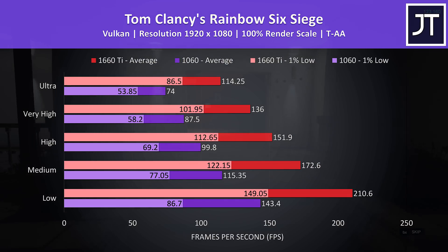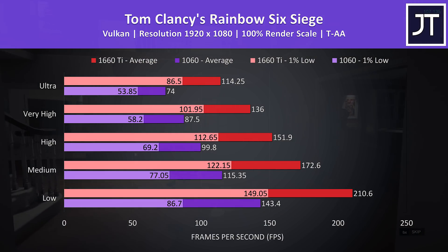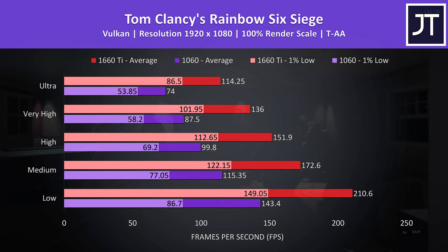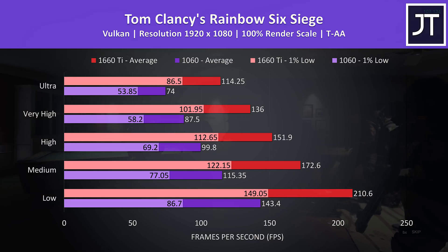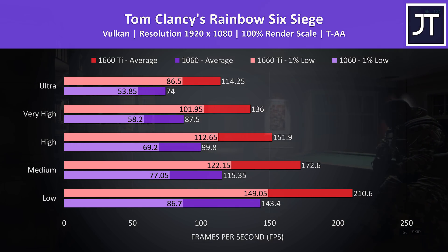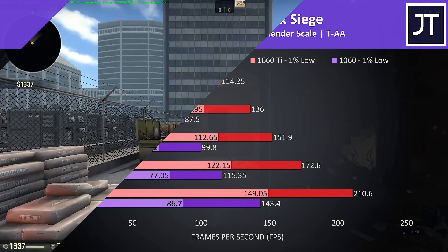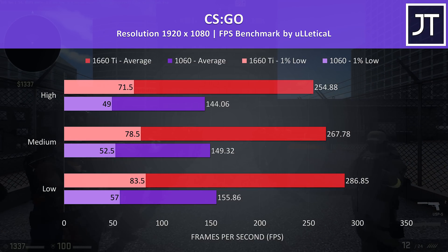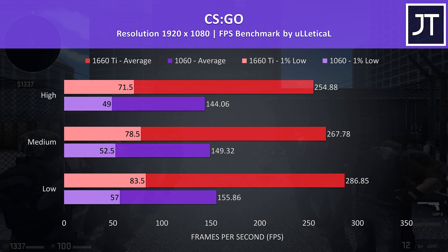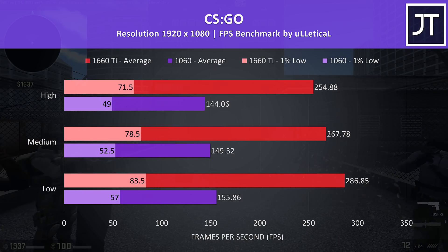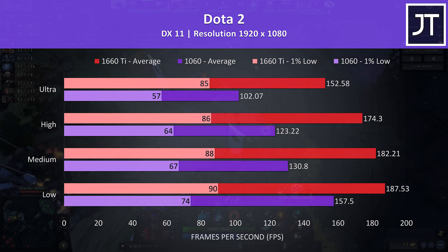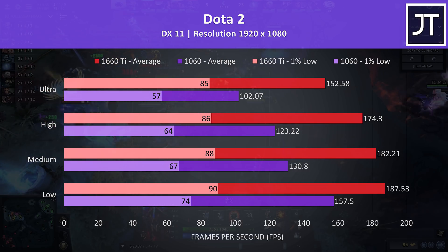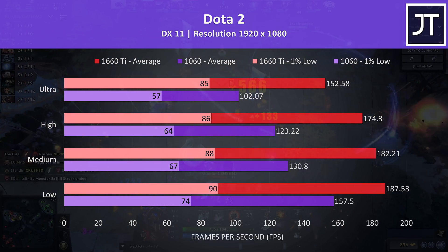Rainbow Six Siege was tested using the game's benchmark tool with the latest Vulkan option. The 1% low was ahead of even the averages the 1060 could produce at all settings, and at ultra settings the 1660 Ti was 54% faster in average FPS. CS:GO was tested with the Ulletical FPS benchmark and saw the largest difference out of all 15 games — a huge 77% boost to average frame rate with all settings maxed out on the 1660 Ti. Dota 2 also saw a large difference, with the 1660 Ti almost 50% faster at ultra settings.